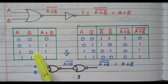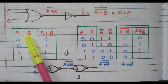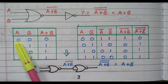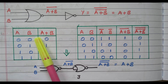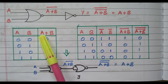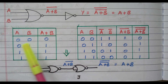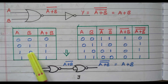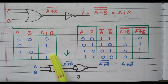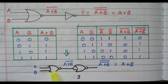Now we will verify with the truth table. Two inputs A and B with combinations: 0,0 / 0,1 / 1,0 / 1,1. For normal OR gate A plus B: 0 plus 0 is 0; 0 plus 1 is 1; 1 plus 0 is 1; 1 plus 1 is 1. So the output of the normal OR gate is 0,1,1,1. Now we will verify whether we get the same output using the NOR gate implementation.